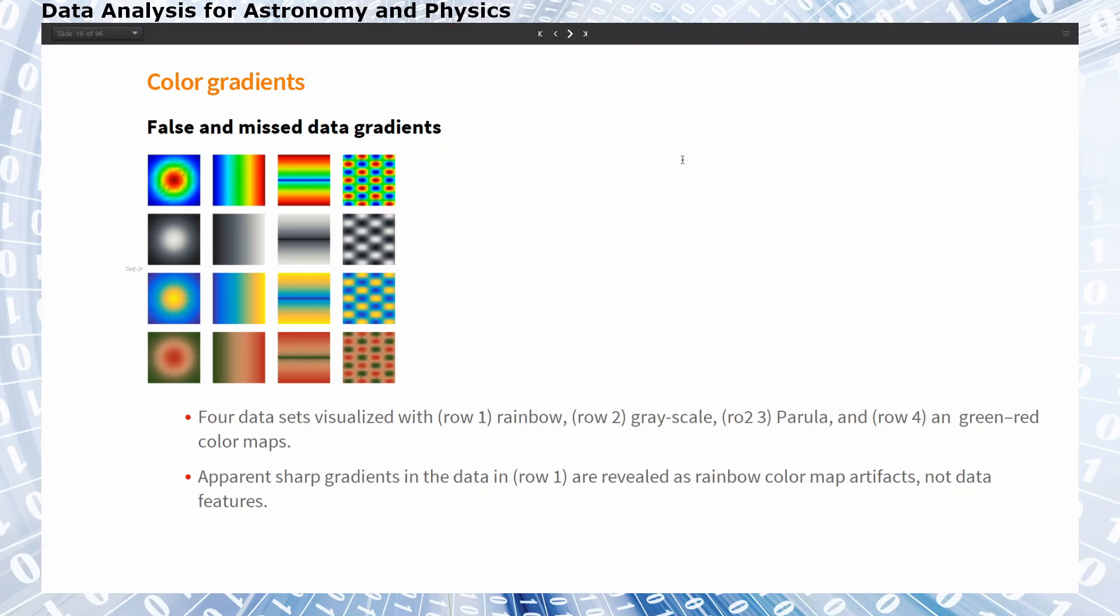We need to use a color scaling that does not introduce false gradients. And I try to show this in this figure. The top row is again the rainbow color scale and looking at the left column, it looks like there is a very sharp gradient going from the blue to the green and then going from the green to the reddish part of the plot.